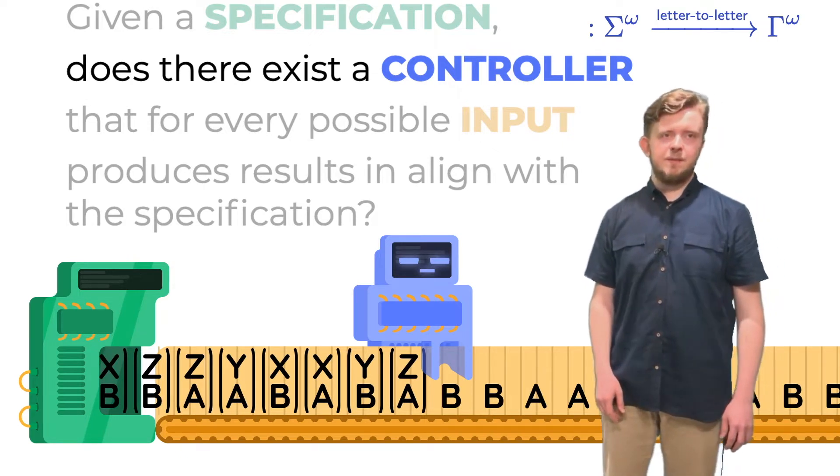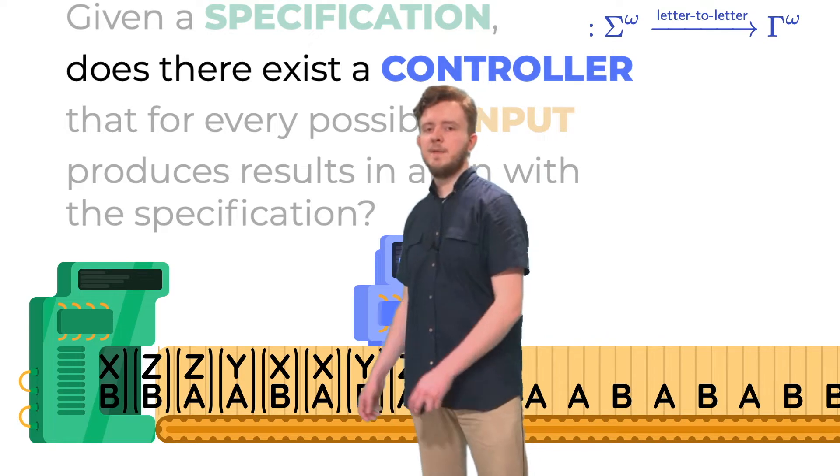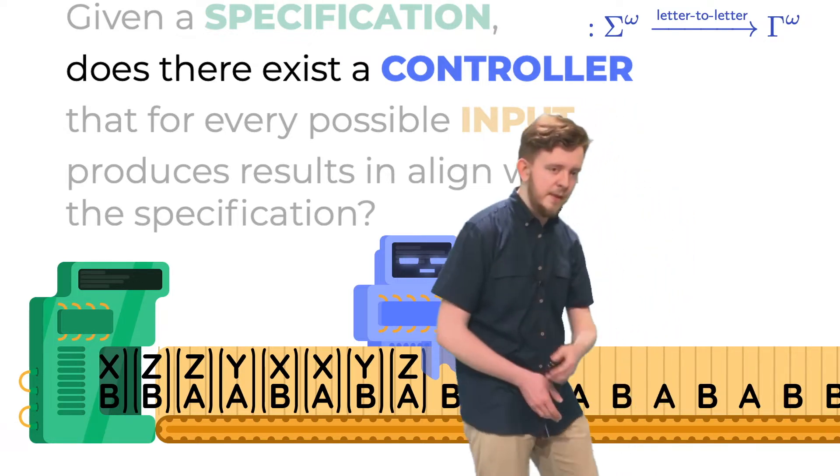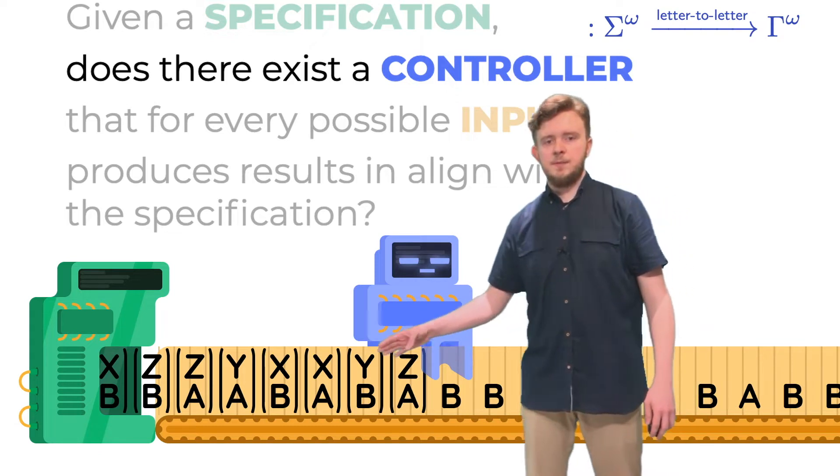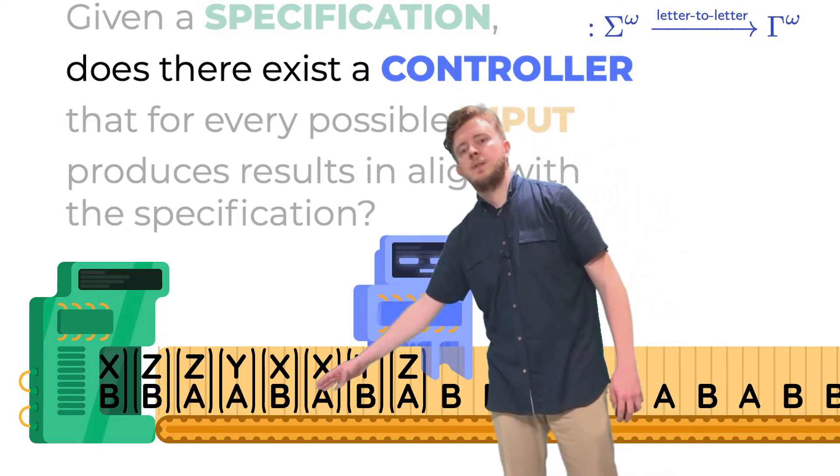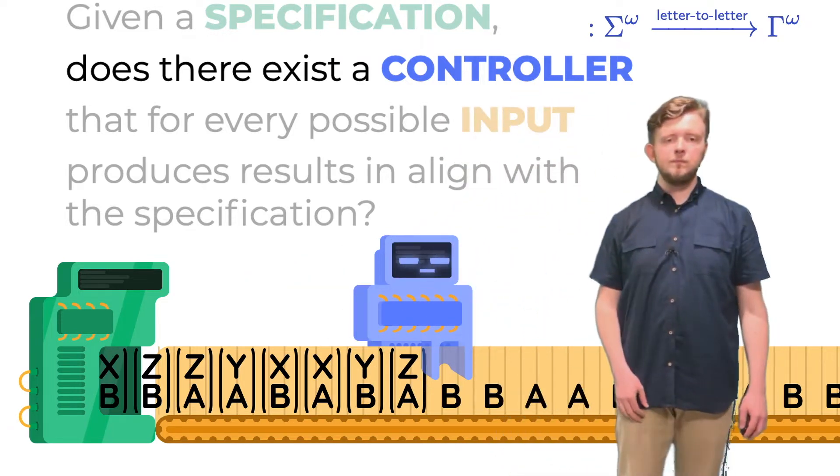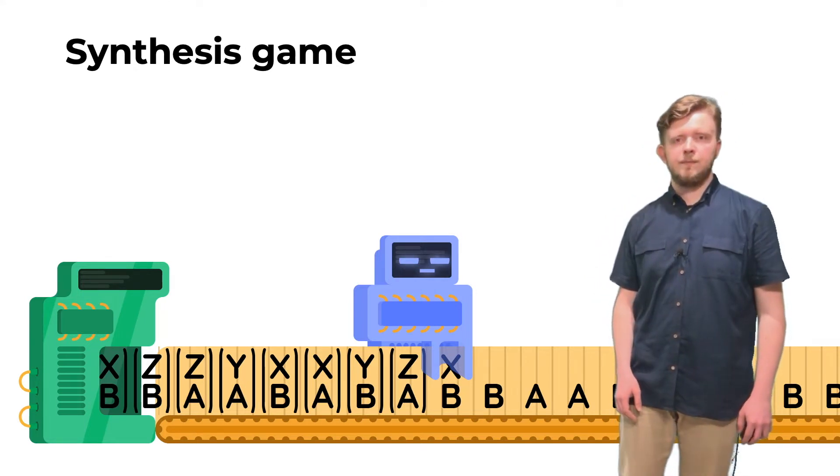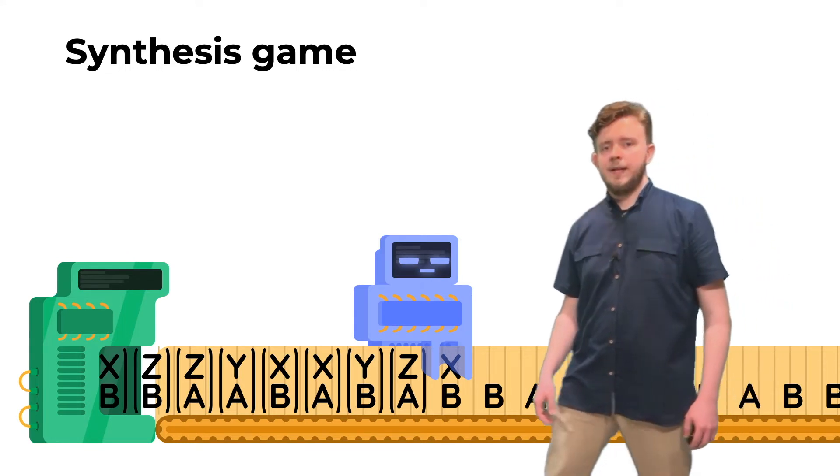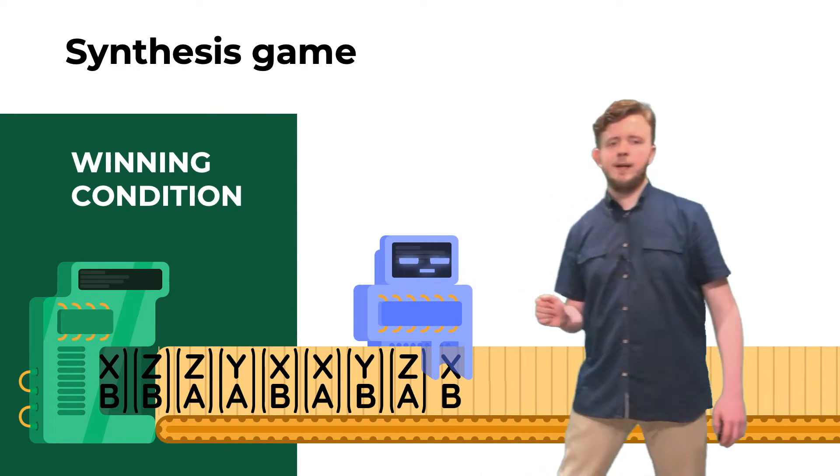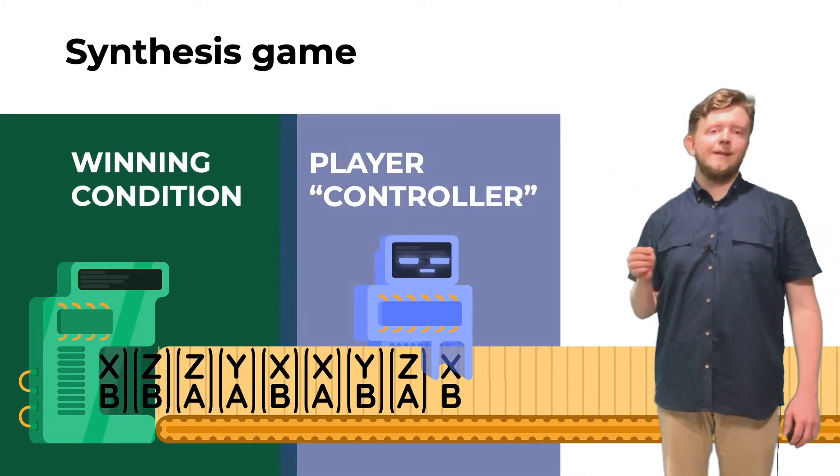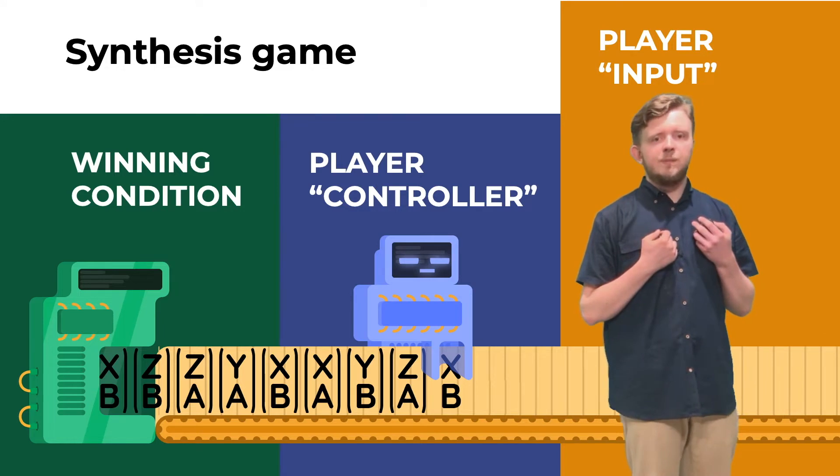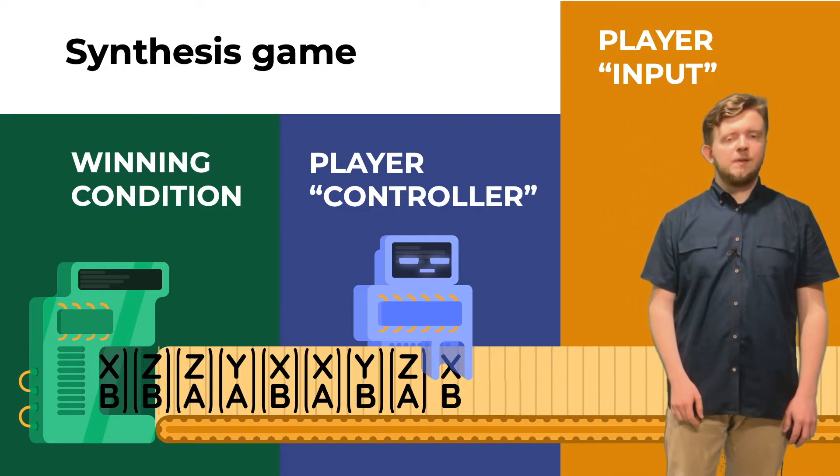Let me now repeat the formulation of the Church's problem. We are given a specification and we ask whether there exists a controller here, such that for every possible input here, the results of the controller together with the input will be accepted by the green specification. We may also look at this problem from the viewpoint of game theory.